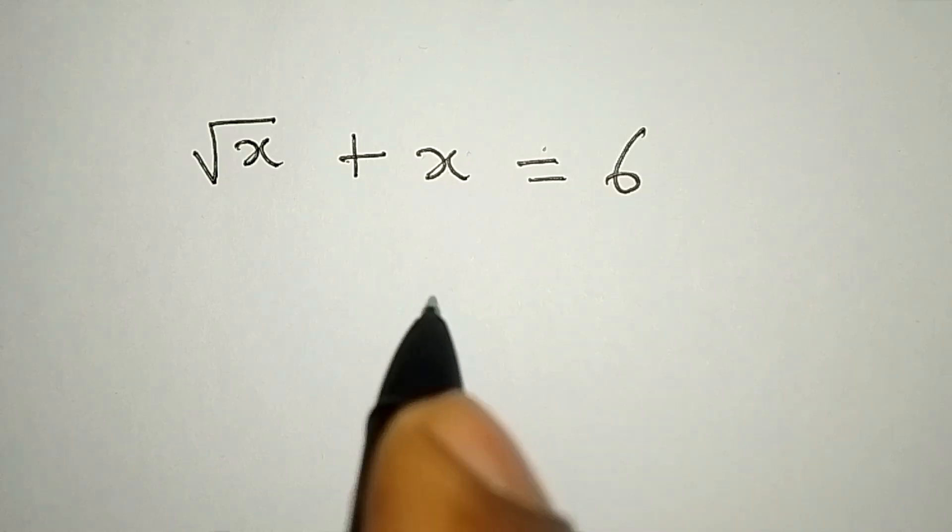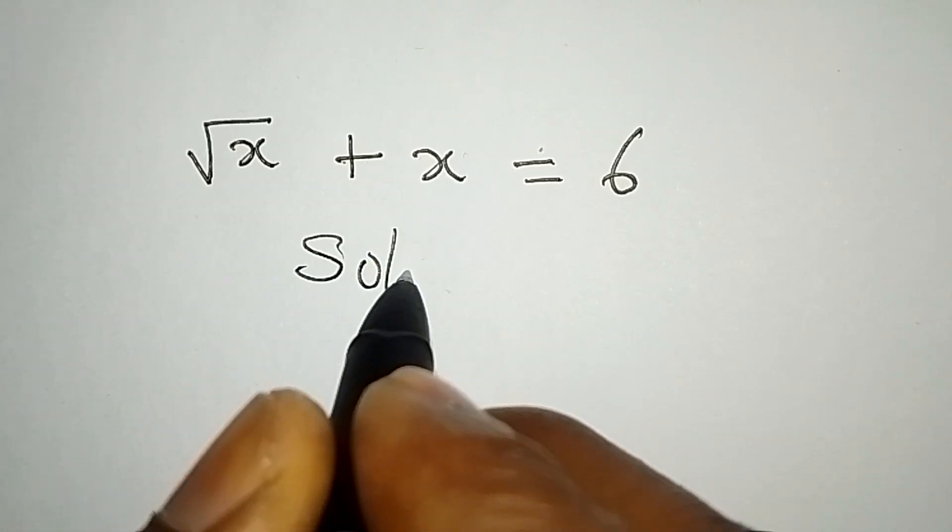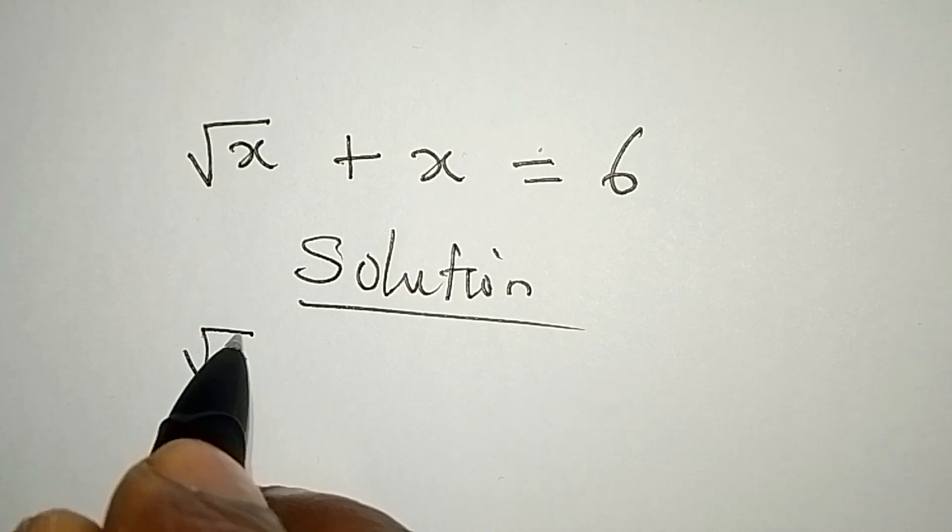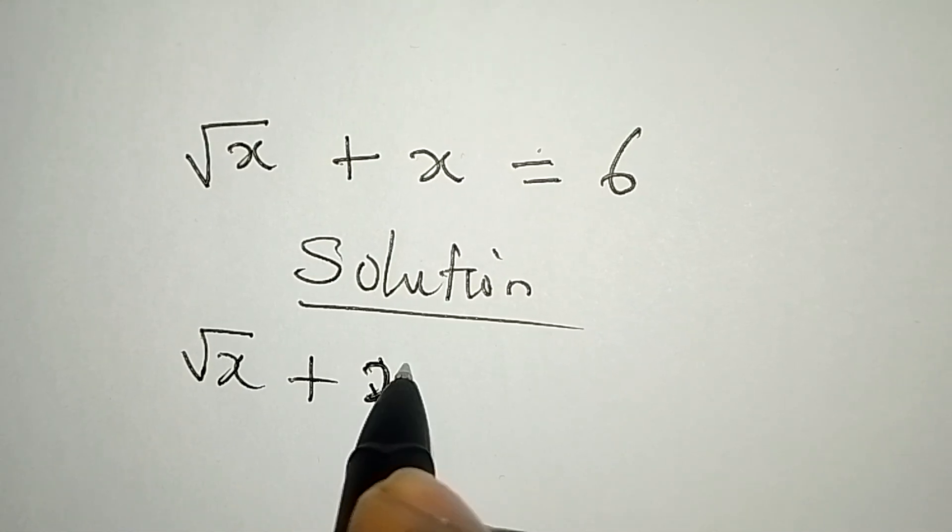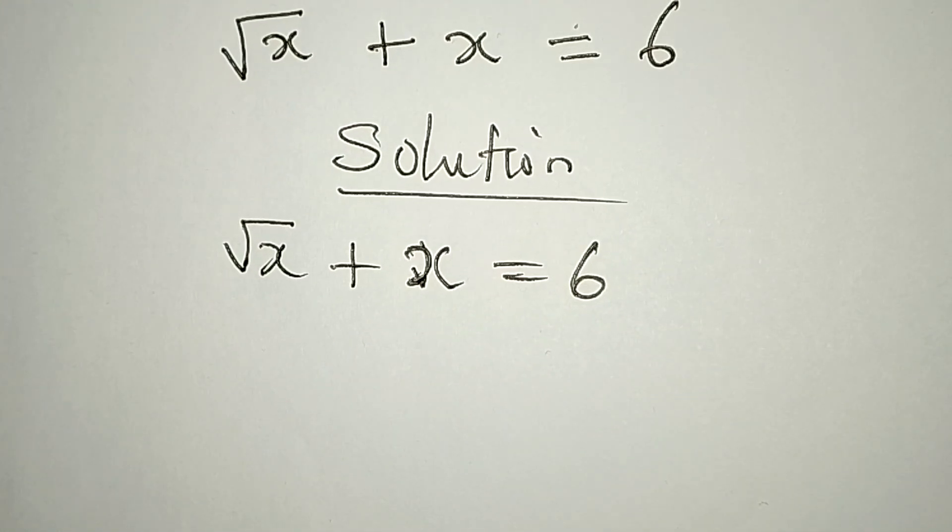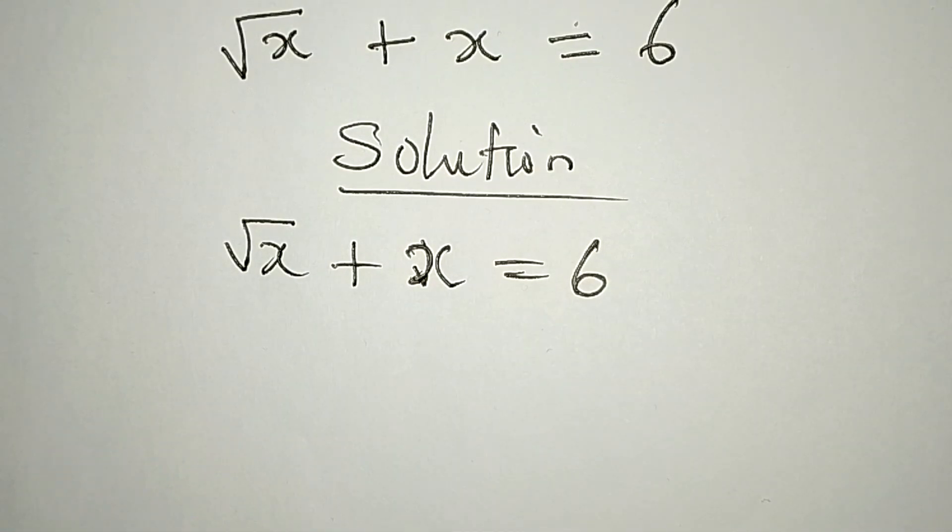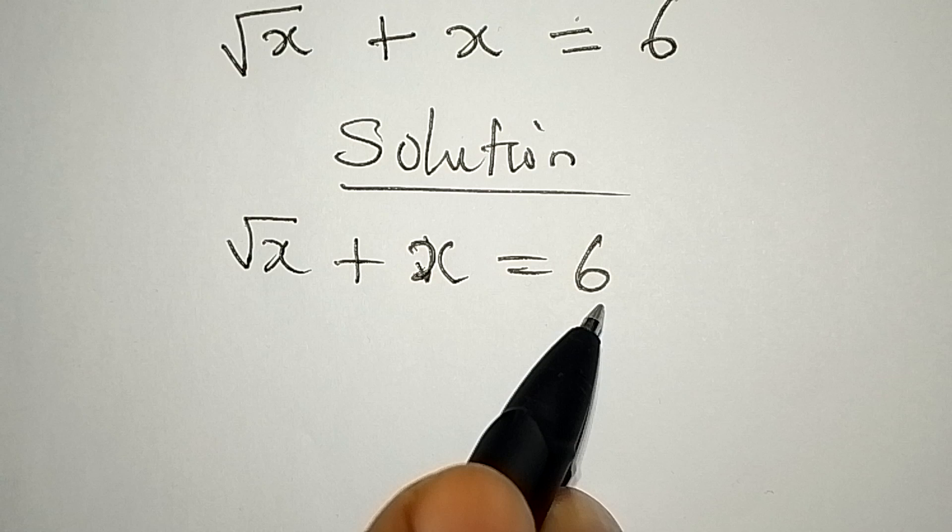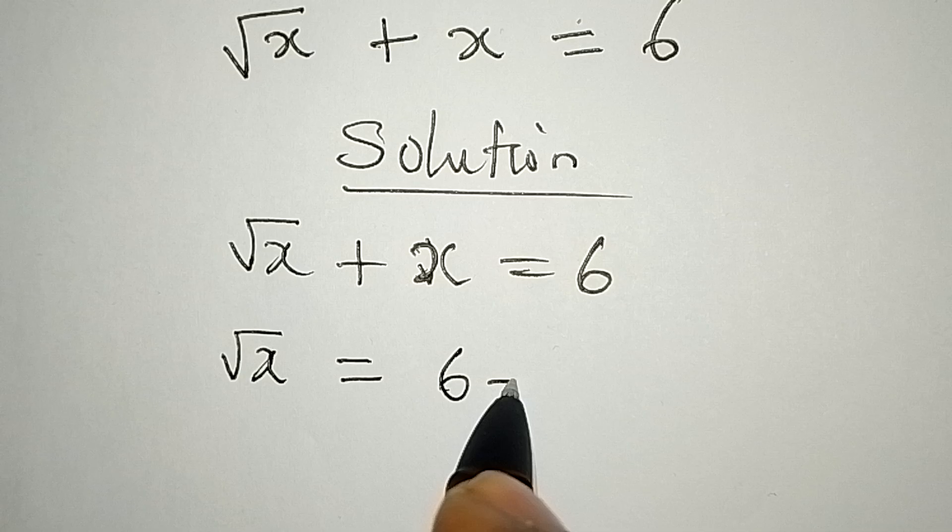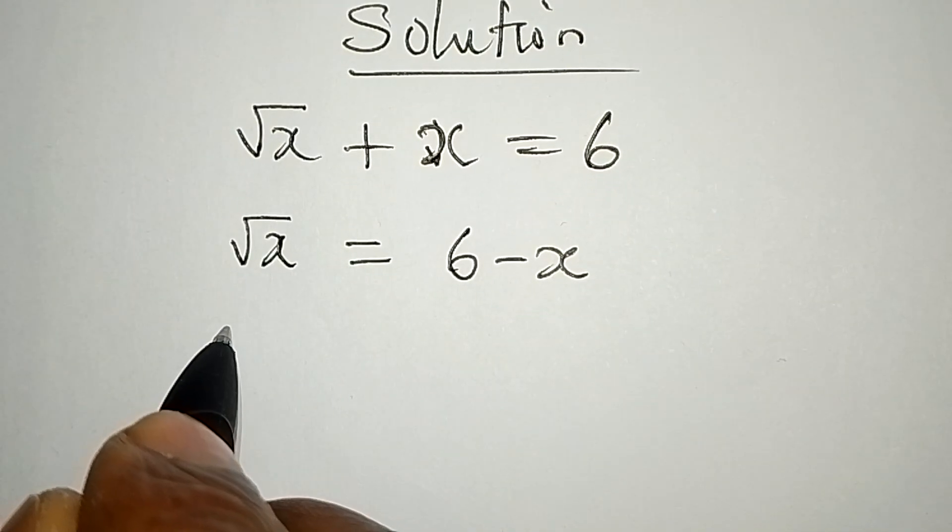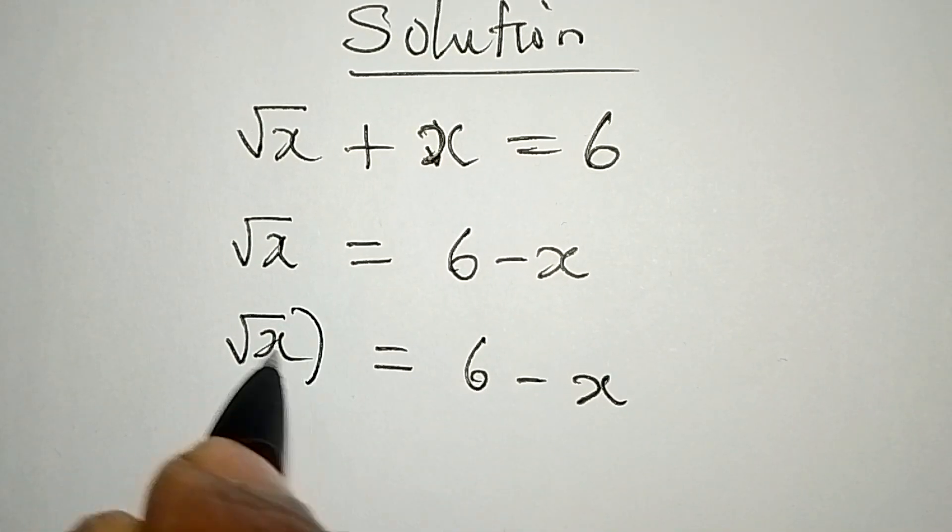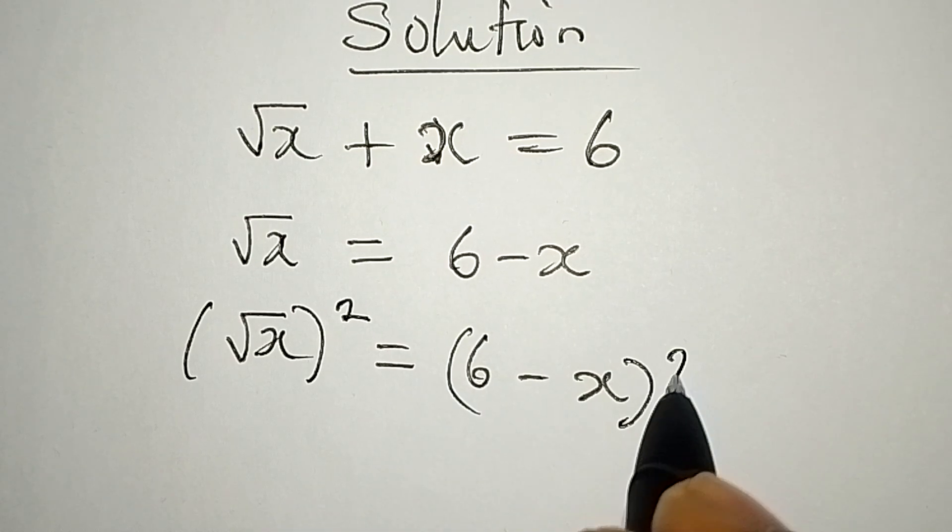Hello everyone, let's provide the solution to this problem: √x + x = 6. First, I'm going to take x to the other side so that we have √x = 6 - x, and then we'll square both sides.